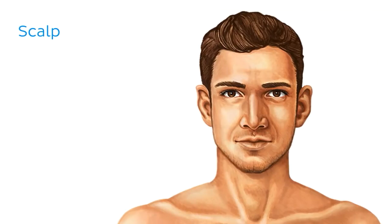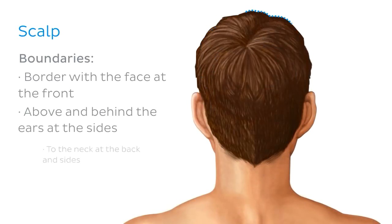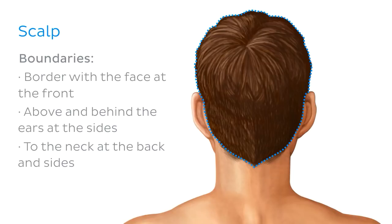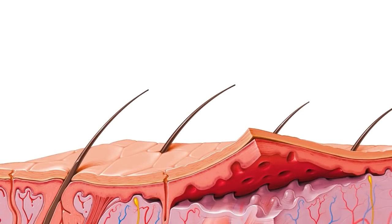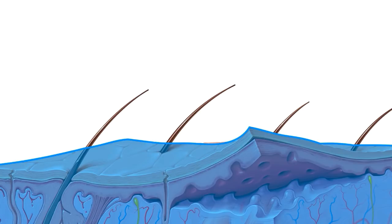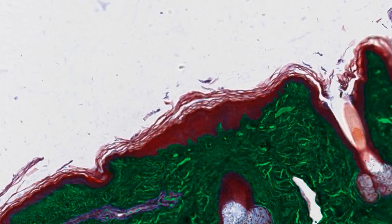The scalp includes all the layers covering the skull on the top, back and sides, and has its boundaries at the border with the face at the front, above and behind the ears at the sides, and to the neck at the back and sides. For the purposes of this tutorial we'll be discussing just the outer layer — the skin of the scalp — as this is where the hair grows from. In the image, the epidermis is stained red due to the cells' cytoplasms, and the dermis is stained blue because of its collagen content.